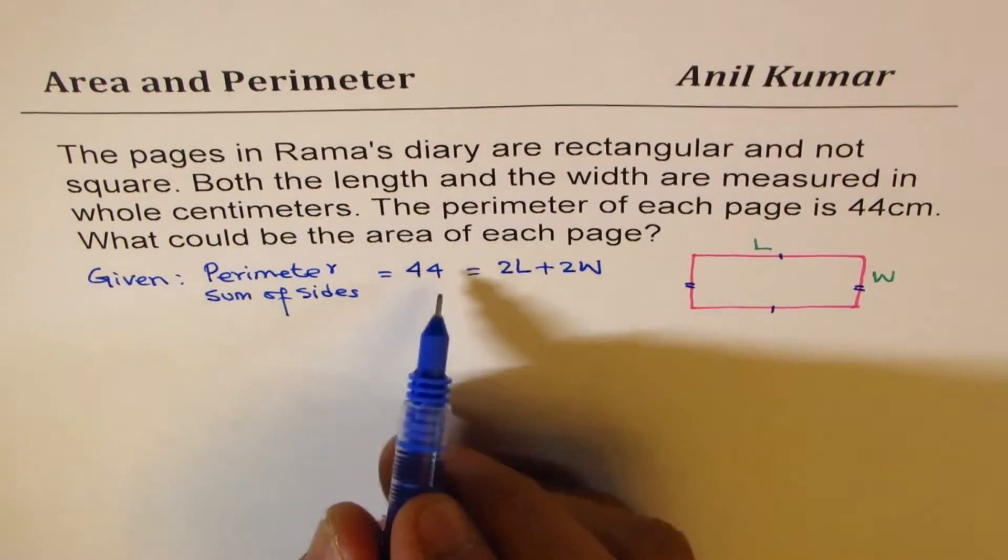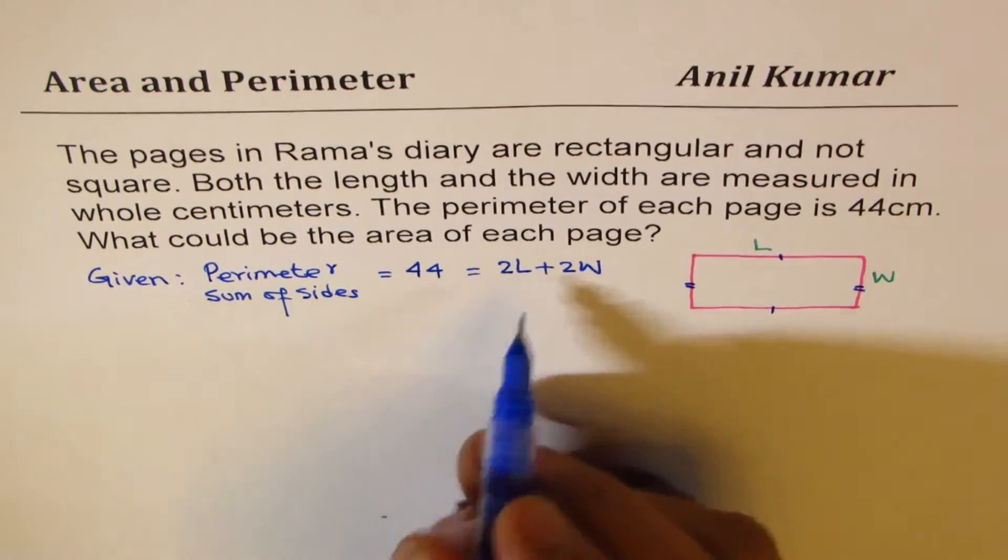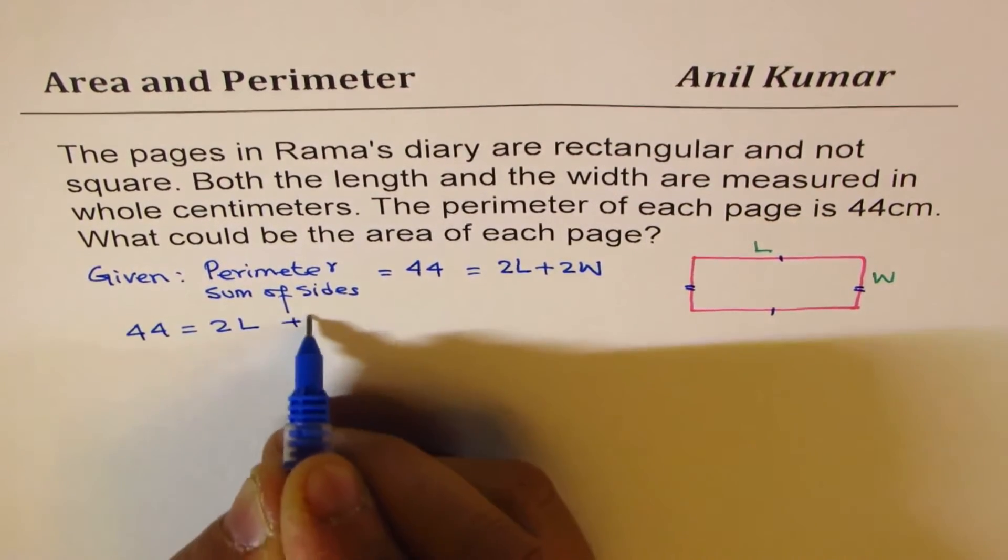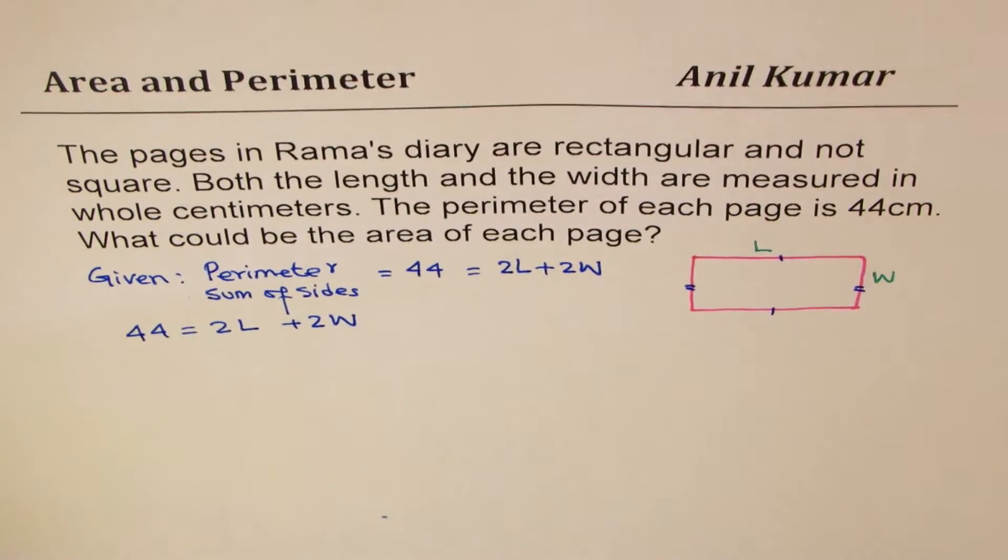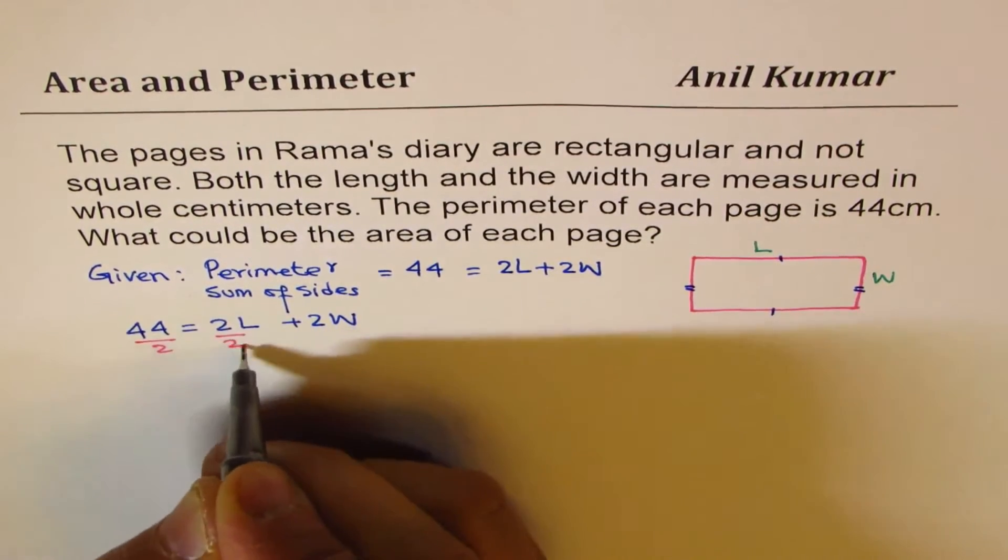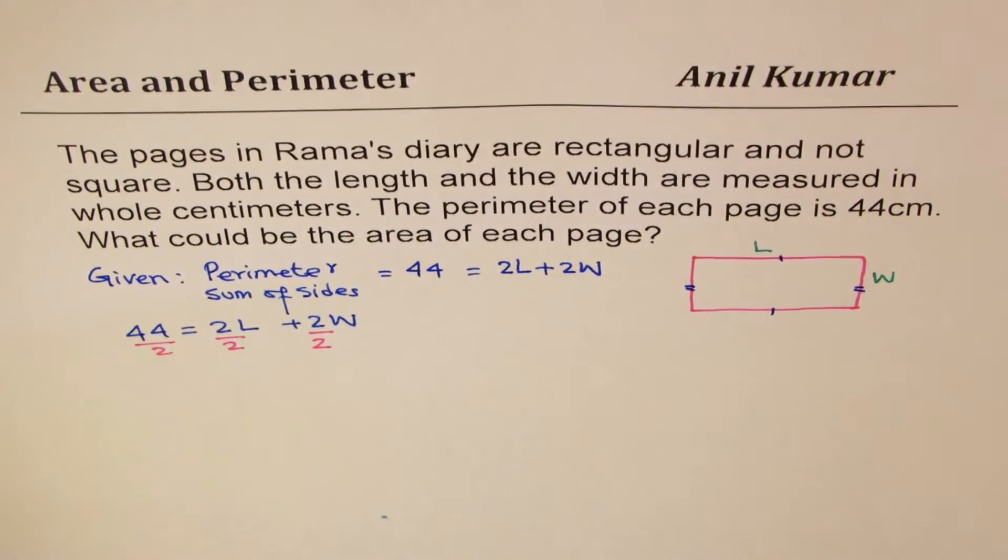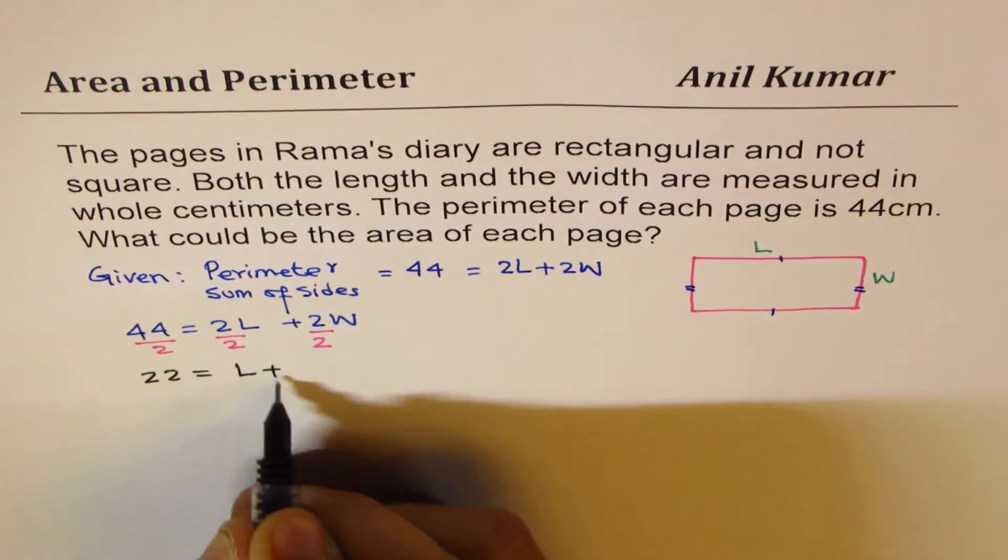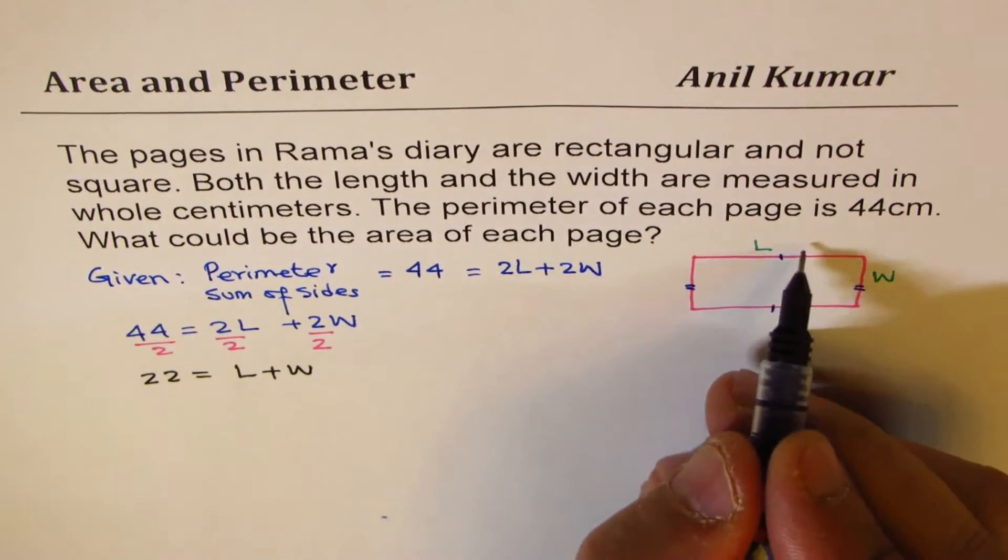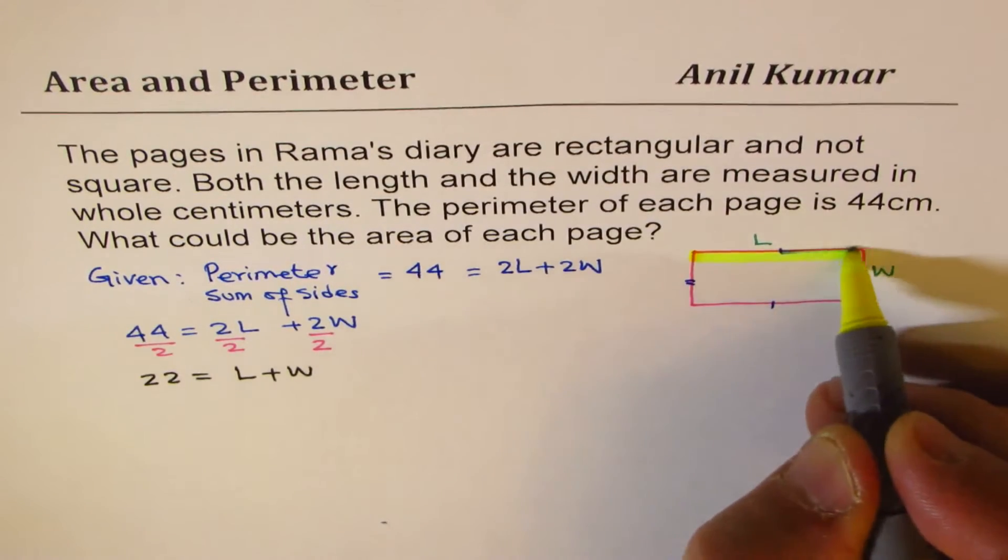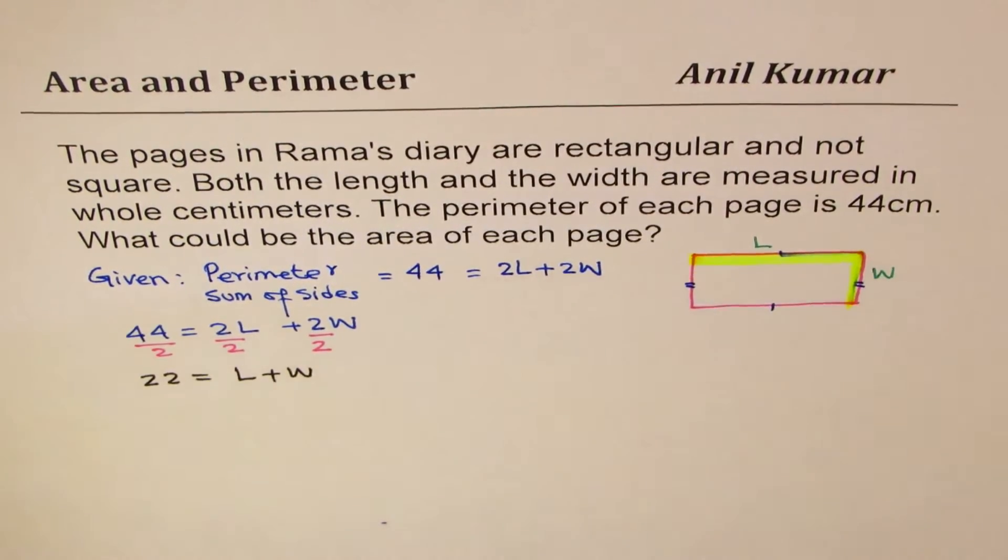Now we can divide all by 2. So what we have here is 44 equals to twice length plus twice width. So next step I will divide by 2 all three terms. So what do we get? We get 22 equals to length plus width. That is sum of these two sides is 22 for us.